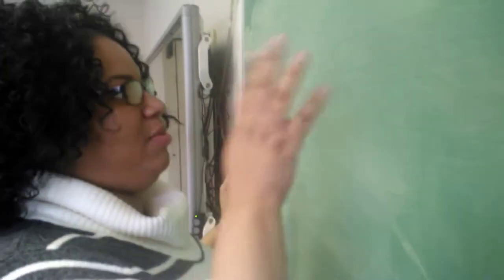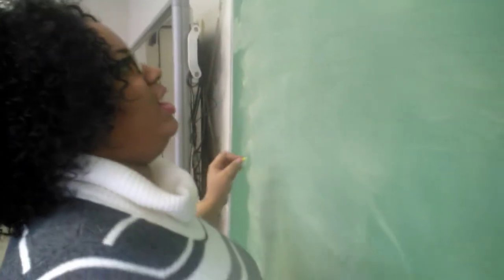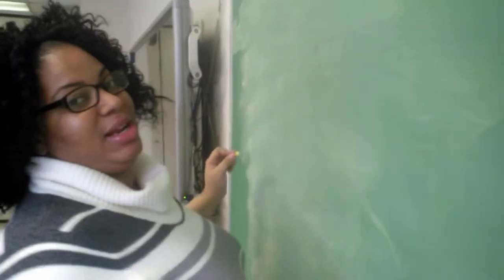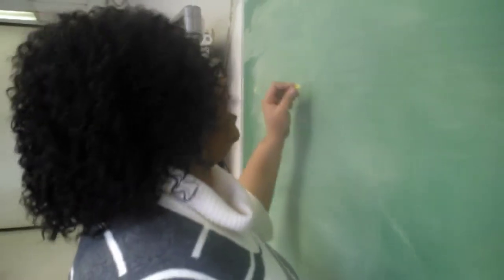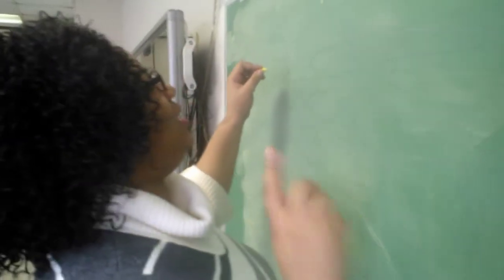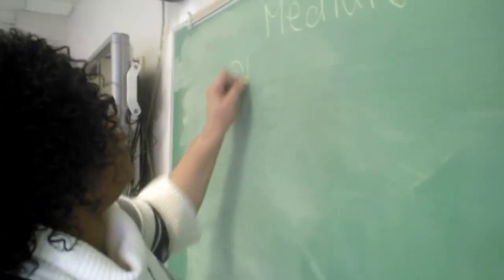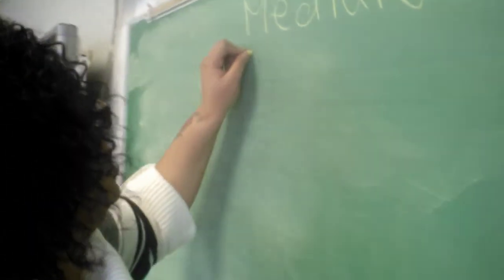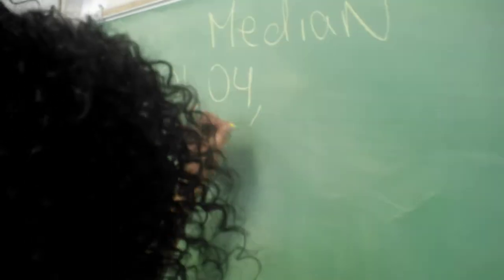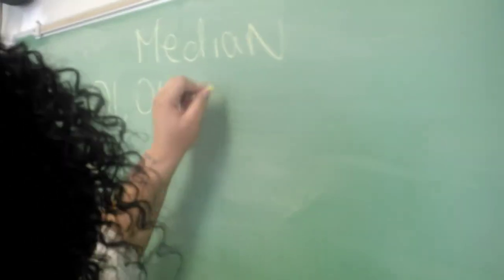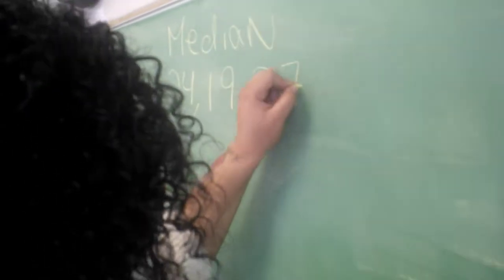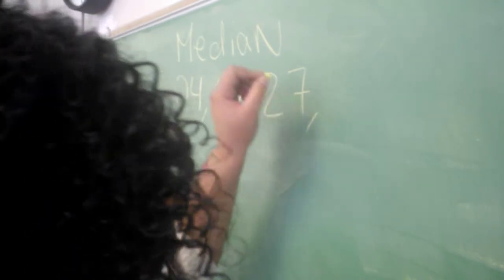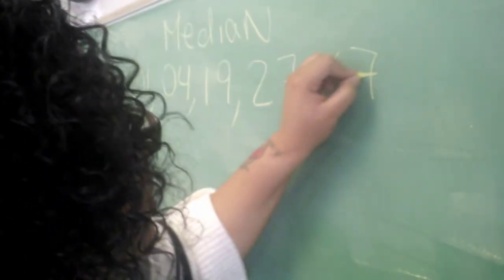Talk it through. Talk it through. You recording now? Yeah, go ahead. So we're looking for the median. My name is Ken. We're looking for the median. Our data set numbers are 0, 1, 0, 4, 19, 27, and 87.